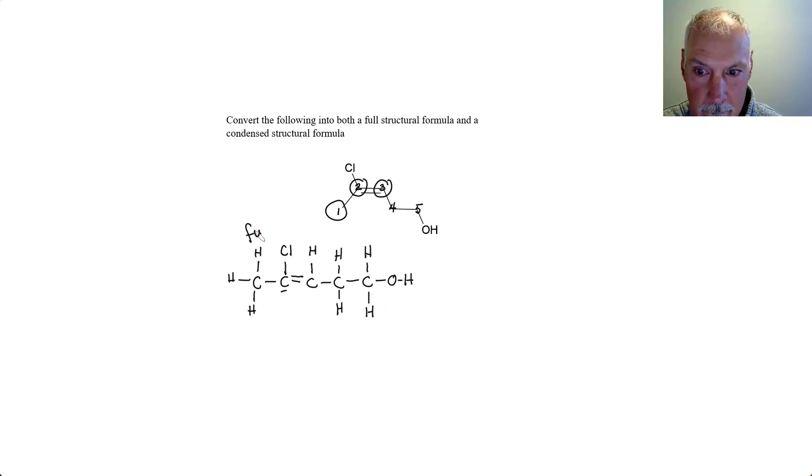So that would represent my full structural formula. Let's take it now and condense it. So CH3 for this carbon, moving on to the second carbon. That carbon is connected to a chlorine and that's it till we get to the next carbon, which is connected to a hydrogen. And then our next carbon is connected to two. And our final is connected to two hydrogens and an OH group. And this represents the condensed formula.